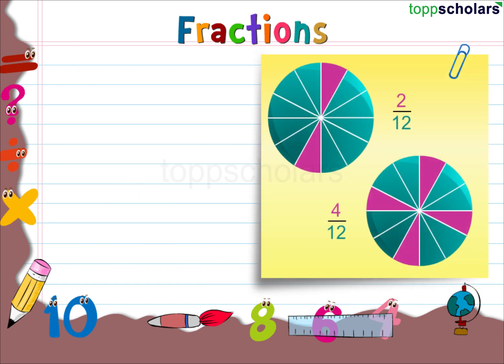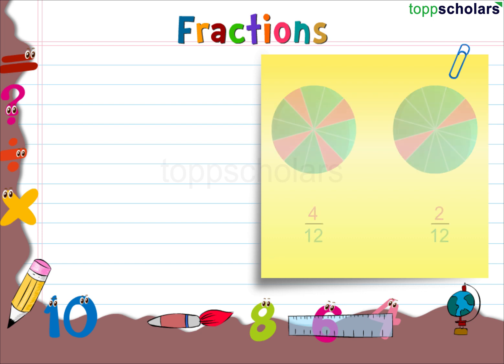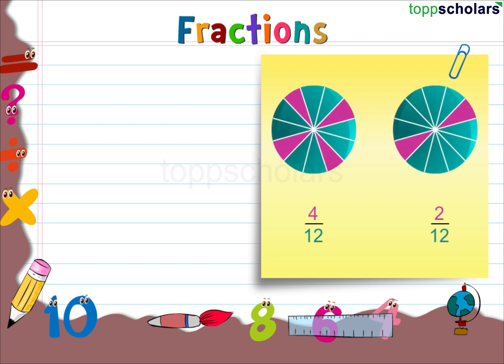Let's now learn how to order fractions. Look at the following circles. In the first circle, two parts are shaded, so the fraction is 2 by 12. In the second circle, four parts are shaded, so the fraction is 4 by 12. Which shaded part is greater — 2 by 12 or 4 by 12? 4 by 12 is greater. We write 4 by 12 is greater than 2 by 12.